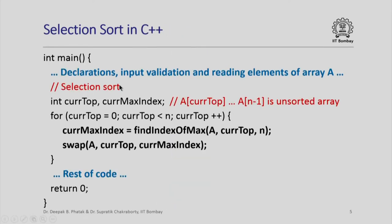How did our program in C++ look like? Basically we had a simple loop with a variable called current_top which incremented from 0 to n minus 1. At any point of time, a[current_top] through a[n-1] was the unsorted array. In each iteration of the loop, I found out the index of the maximum element in the array between indices current_top and n-1, and then I swapped a[current_top] with a[current_max_index].